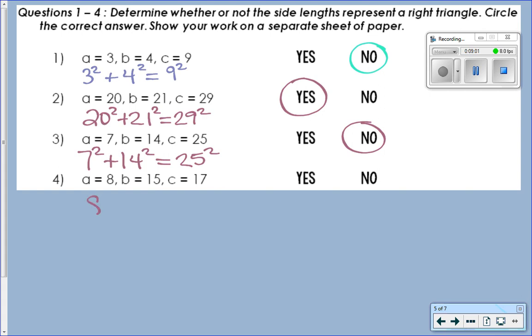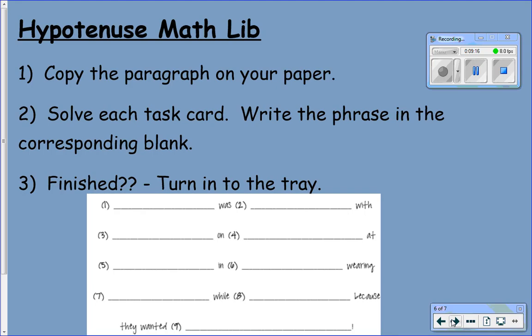Alright, number 4: 8 squared plus 15 squared equals 17 squared. Yes. Questions? All right, then.